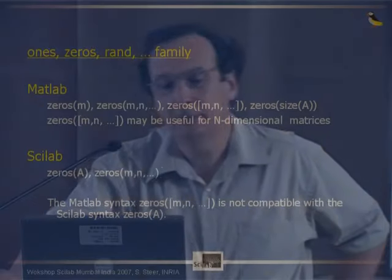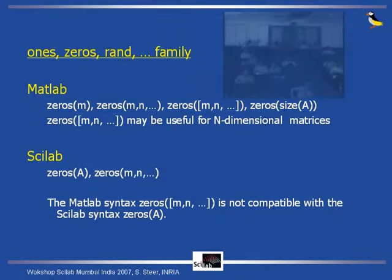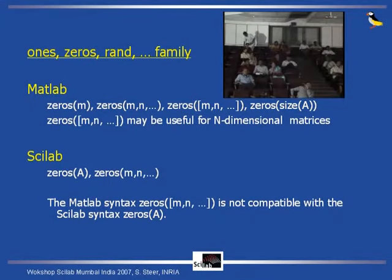So this syntax is very useful. In Scilab, for historical reasons — because at the beginning MATLAB was doing the same — to build a matrix of zeros with the same size as A, you can just enter zeros(A) instead of zeros(size(A)). It is also possible to use the zeros(M, N) syntax, but zeros(A) cannot be used together with the size-based form because they conflict.